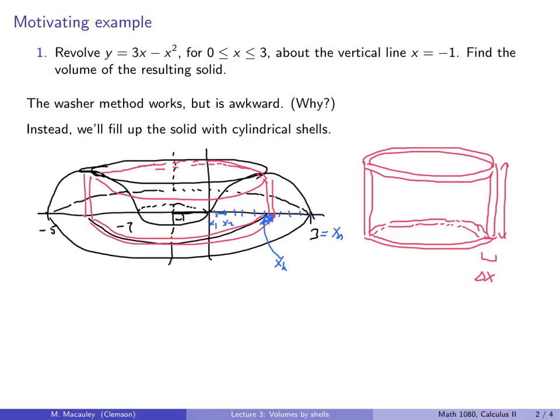So if we're over here, let's call that xₖ. I should probably call that the right endpoint xₖ. If we do that, then the width of this is going to be delta x. The height of this is going to be the y value at xₖ. So that's going to be 3xₖ minus xₖ squared. And then the radius of this is going to be the distance from the origin up to here, and that's xₖ. So the radius is going to be 1 plus xₖ. And again, that one is coming from this distance right here.